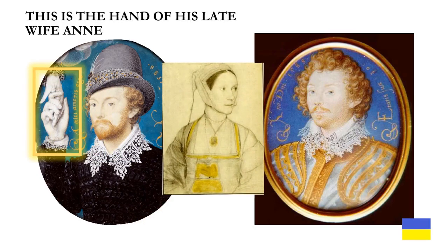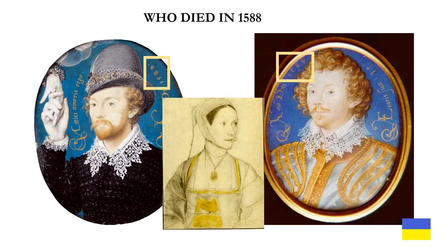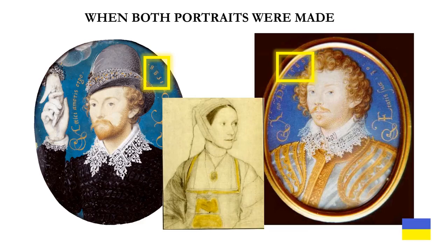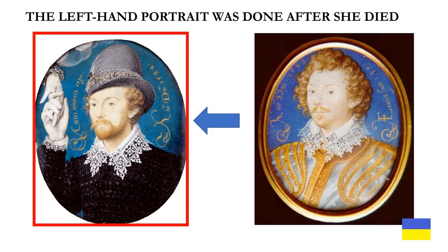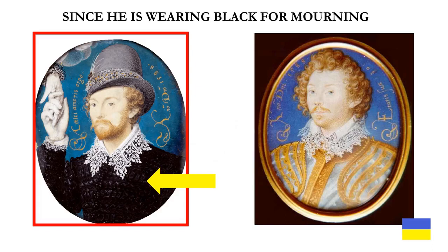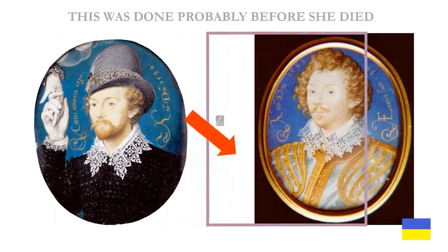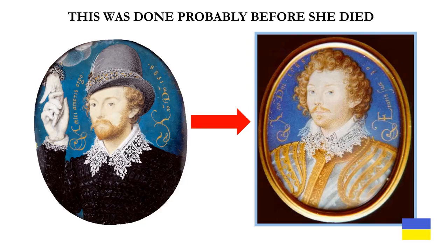And this in the yellow box is the hand of his late wife, Anne, who died in 1588 when both of these portraits were painted. The left-hand portrait was done after she died, since he was wearing black for mourning, and you can also see her hand reaching down to his from heaven. This was done probably before she died — perhaps after — but I believe it was before, because mourning would have taken quite a bit of his time, and being an Earl, he would have had to observe a specific number of months of mourning.